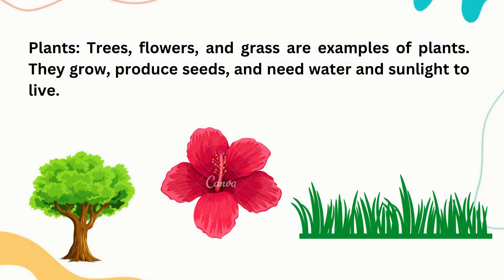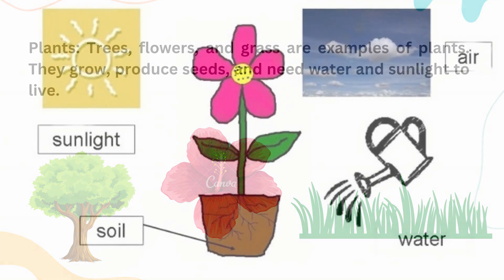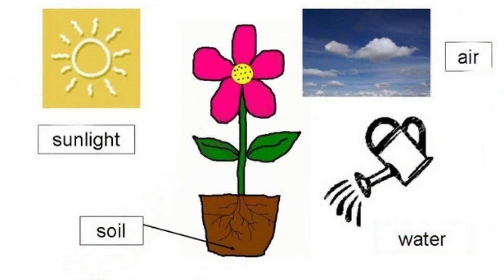Examples — Plants: Trees, flowers, and grass are examples of plants. They grow, produce seeds, and need water and sunlight to live.